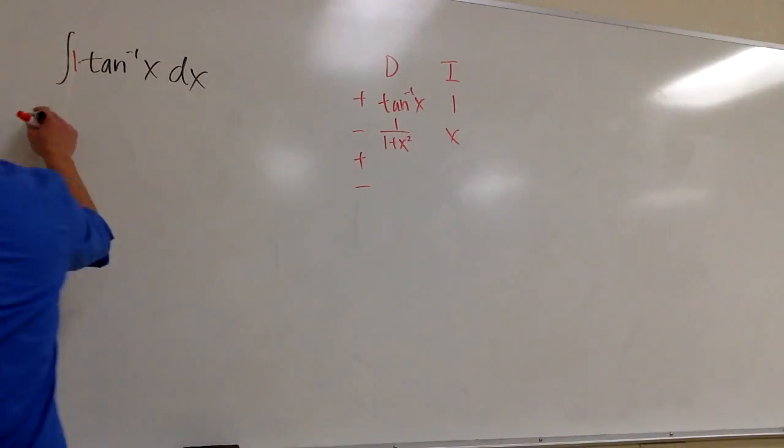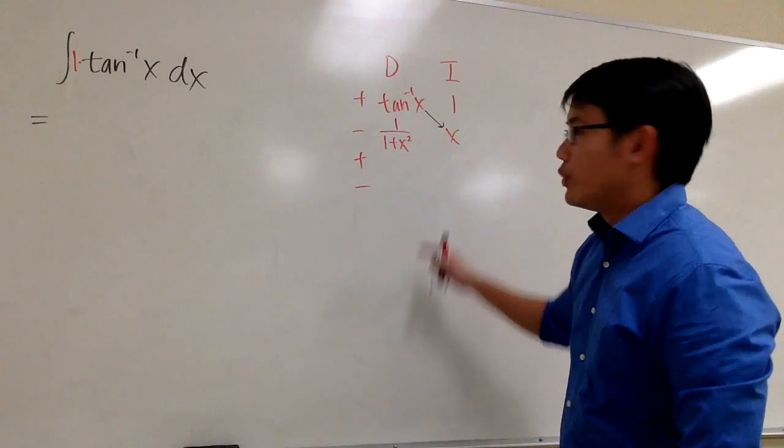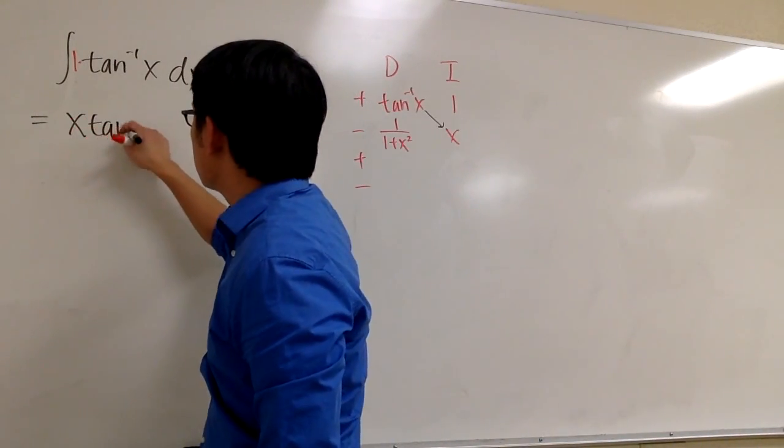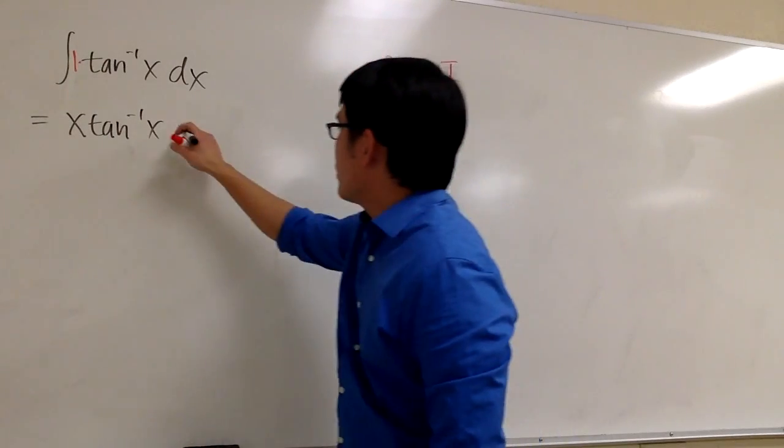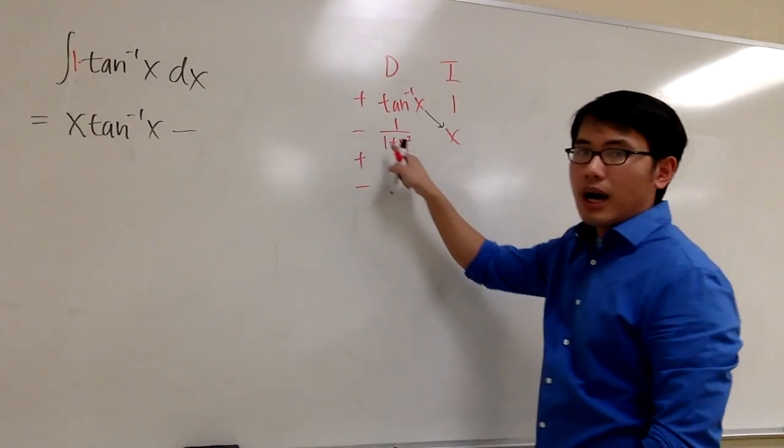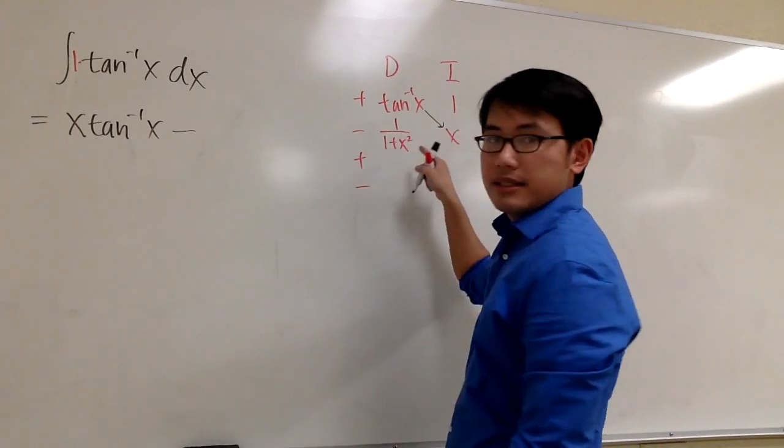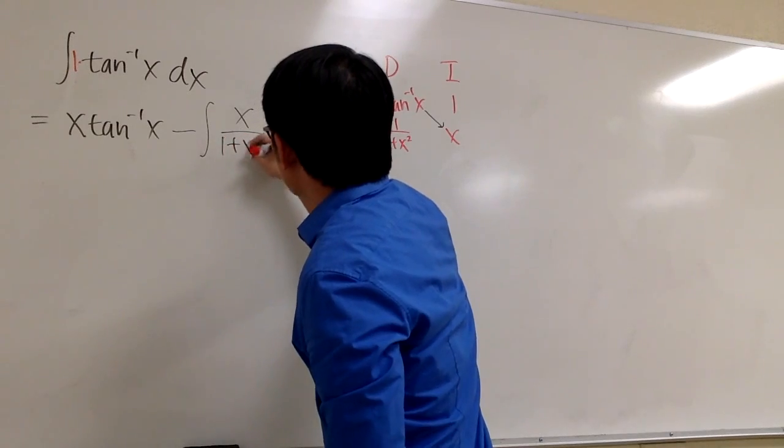Let's get to work right here. This right here is equal to, you take the diagonal as the answer part. We have x times inverse tangent x. That's the first part. And then we're going to minus the product of this row. Namely, it's x over 1 plus x squared, which is also an integral. x over 1 plus x squared.